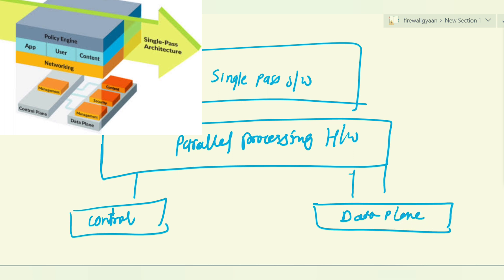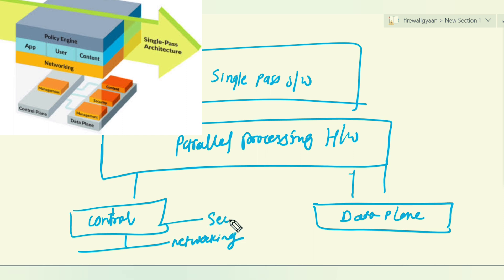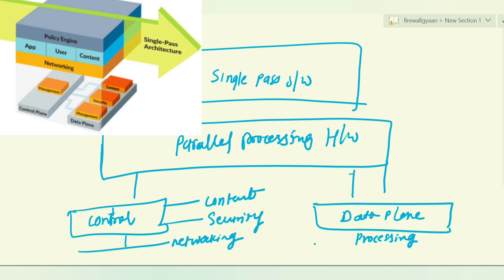When I say the control plane, there are multiple things coming into the picture — your networking, then your security, and your content. Likewise, the data plane contains the actual processing. Whatever is processed from the control plane enters the data plane, and this is where the actual work happens.